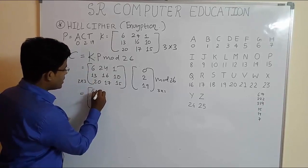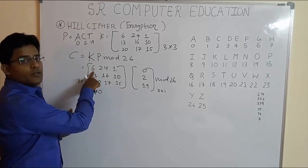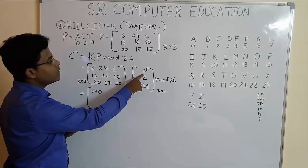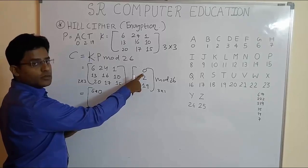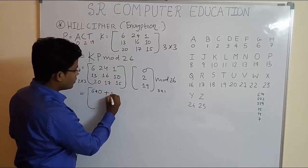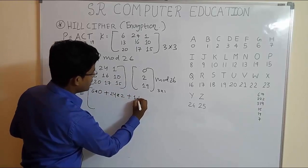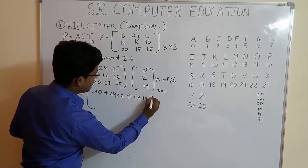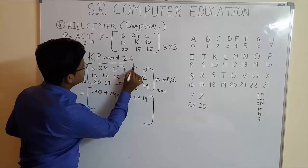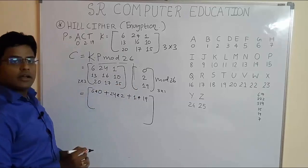For the first element: 6×0, first element of the first row, first column, plus 24×2 plus 1×19. You have to remember to multiply like this. So it's 6×0 + 24×2 + 1×19.